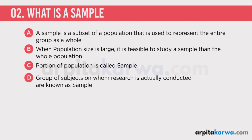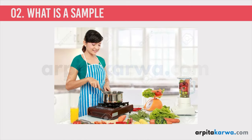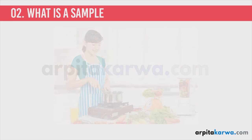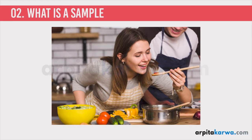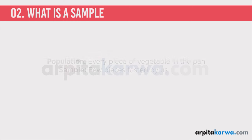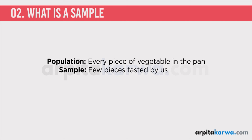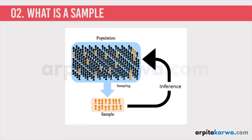Let me give you an example of sampling from daily life. I'm sure you must have cooked vegetables, or maybe you've seen your mother cooking. While cooking vegetables, instead of checking each and every slice to see whether all the small pieces are cooked, what we do is just check a few pieces. If they are cooked, we generalize that the entire vegetable is cooked. This is a classic example of what a sample is. All the pieces of vegetables in that pot are the population, and those two or three pieces you pick to check are your sample. On the basis of that sample, you generalize to the entire population.